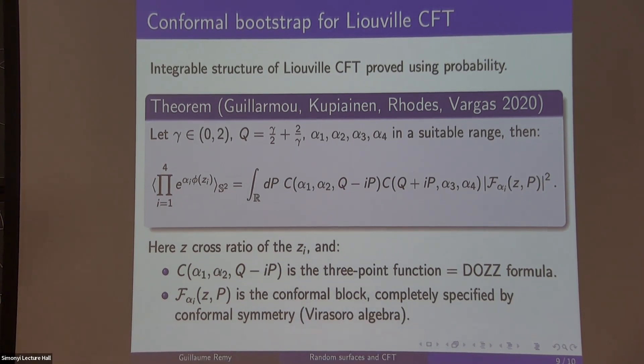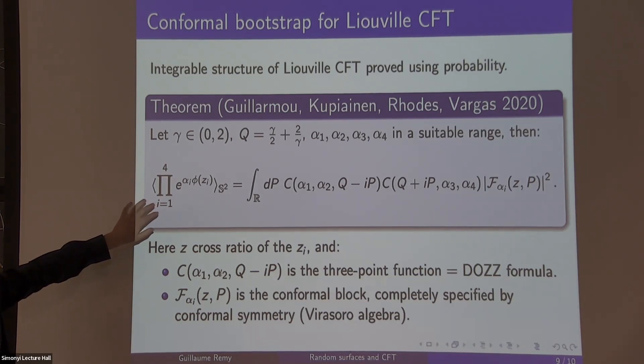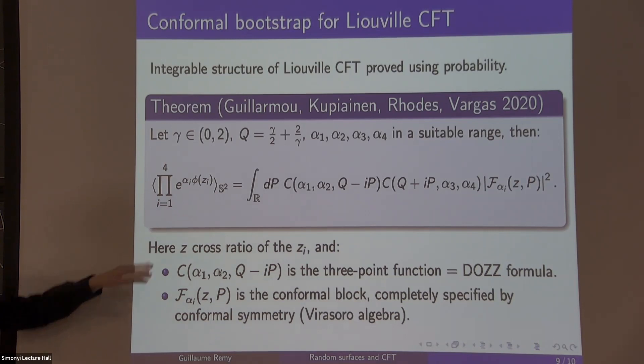Every individual piece corresponds to a structure constant, a three-point function. They're glued together with the conformal blocks. These ideas can be used for a lot of moduli. We use a bootstrap statement on the annulus proved by Woo. These ideas go into the theorems I showed you.